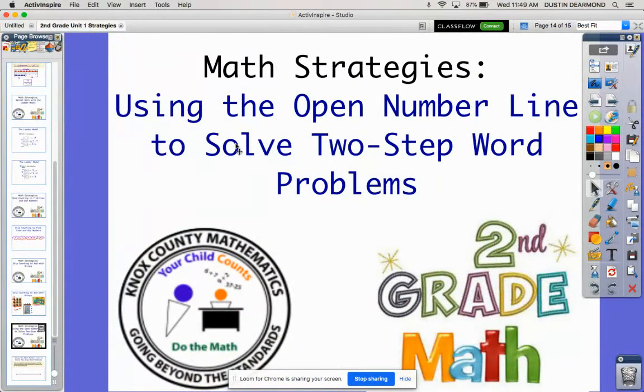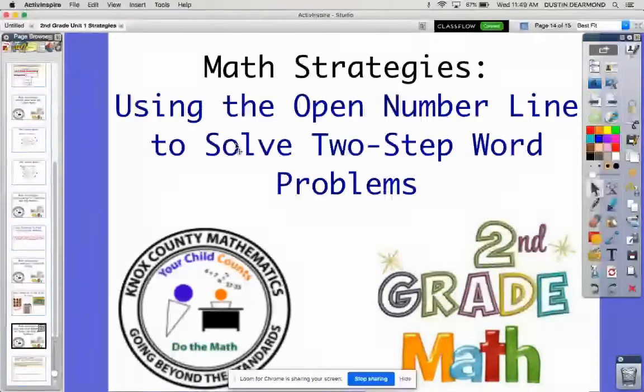In lesson six of Ready Math in second grade, we're moving on to solving two-step word problems. So we did it earlier in the year. We did one-step word problems, and we used number bonds to help us look for the parts and the whole.